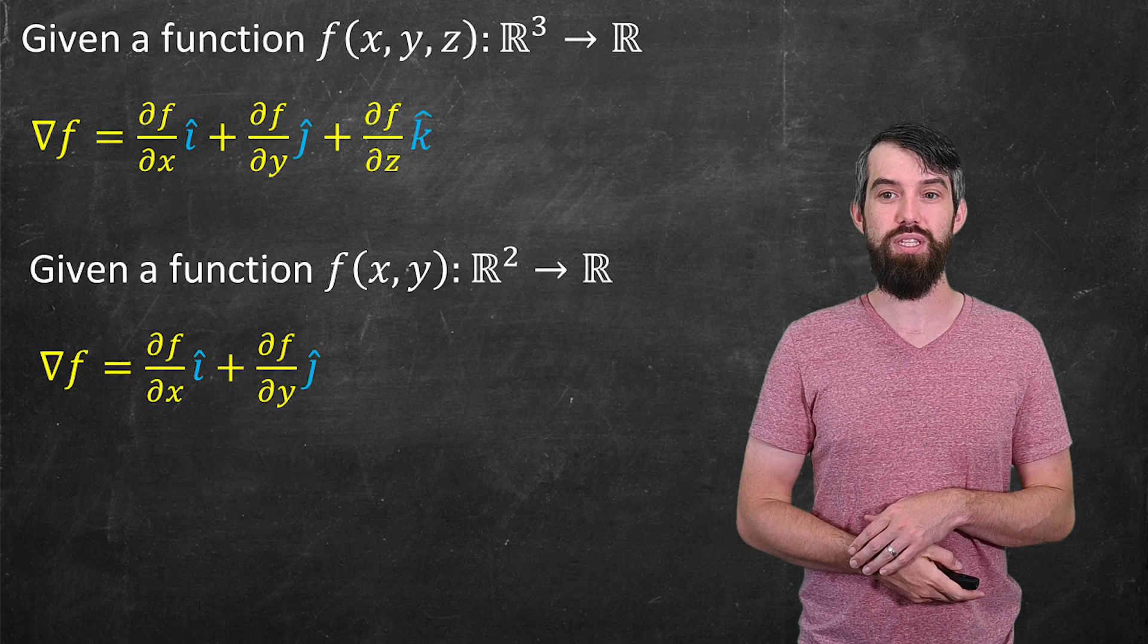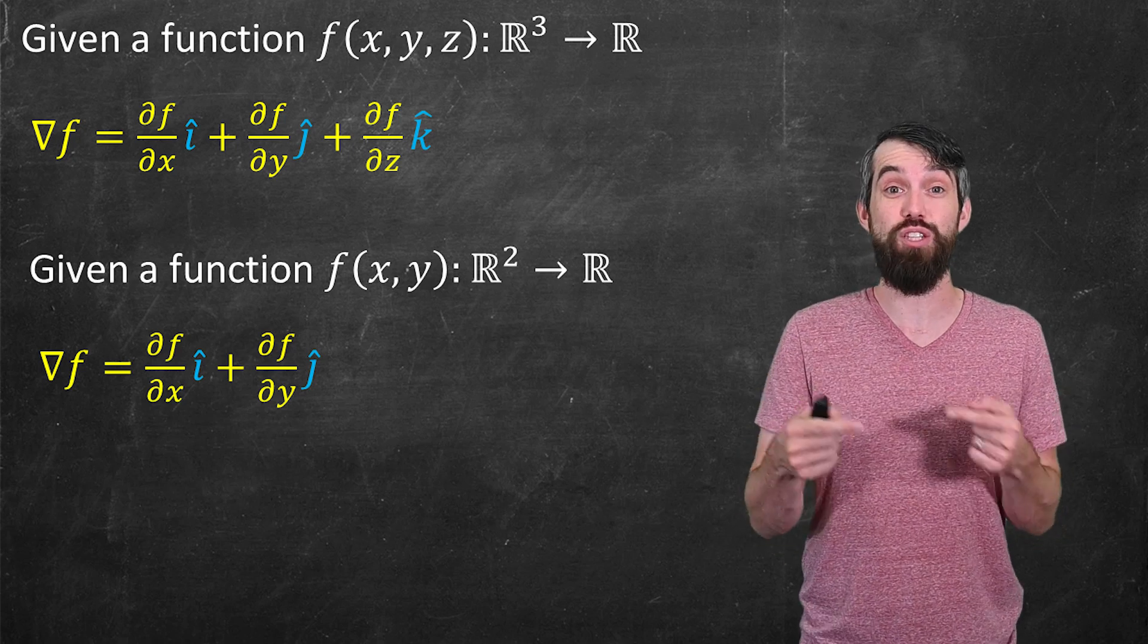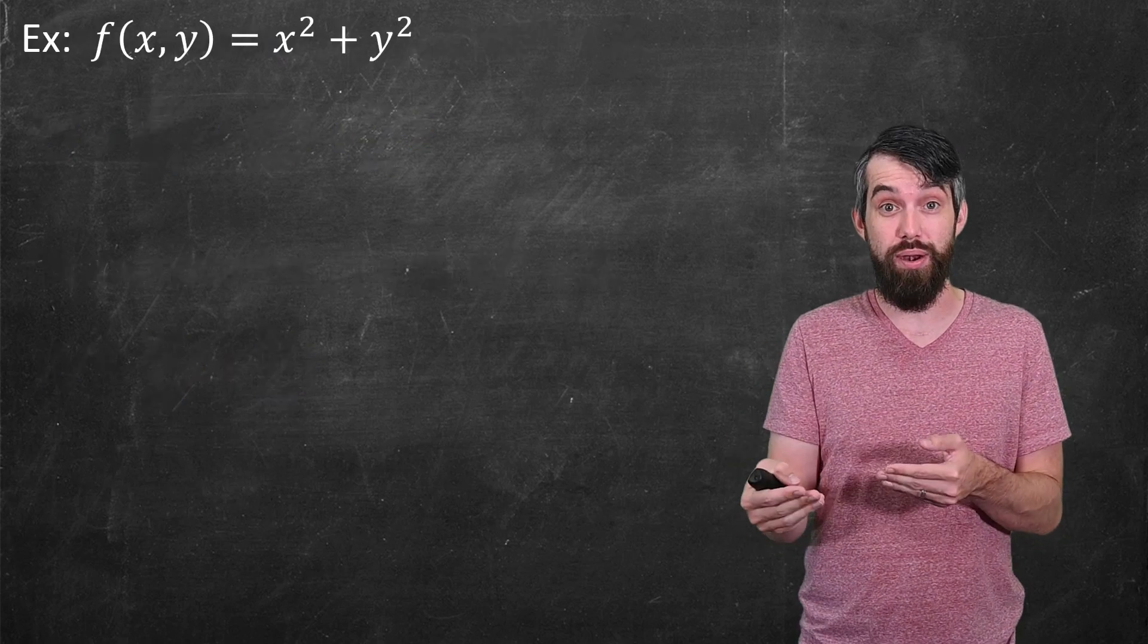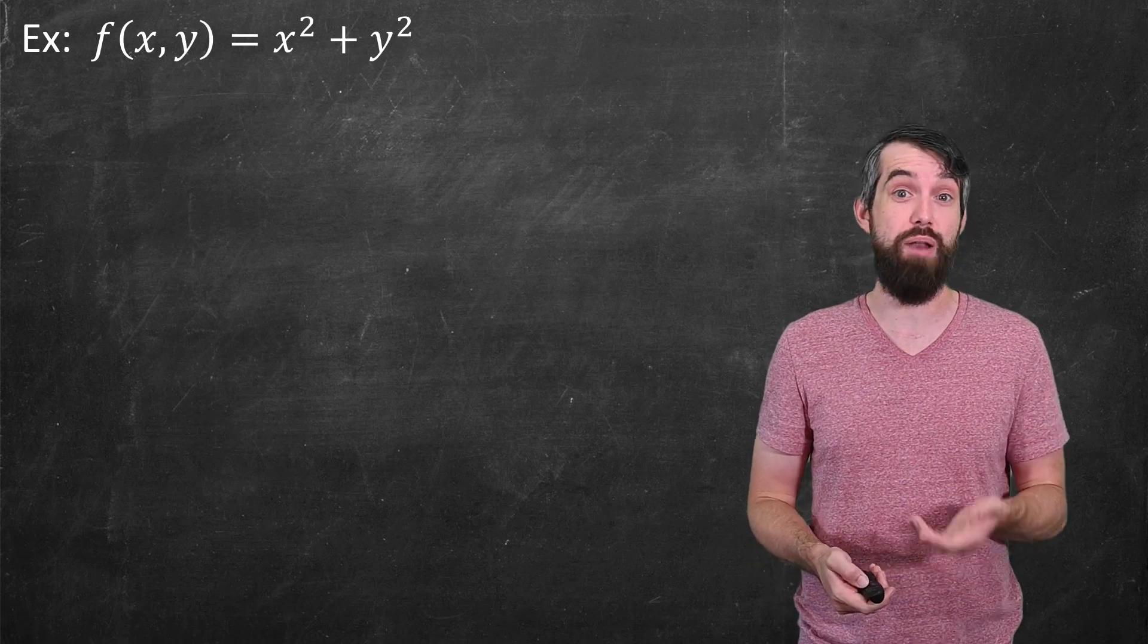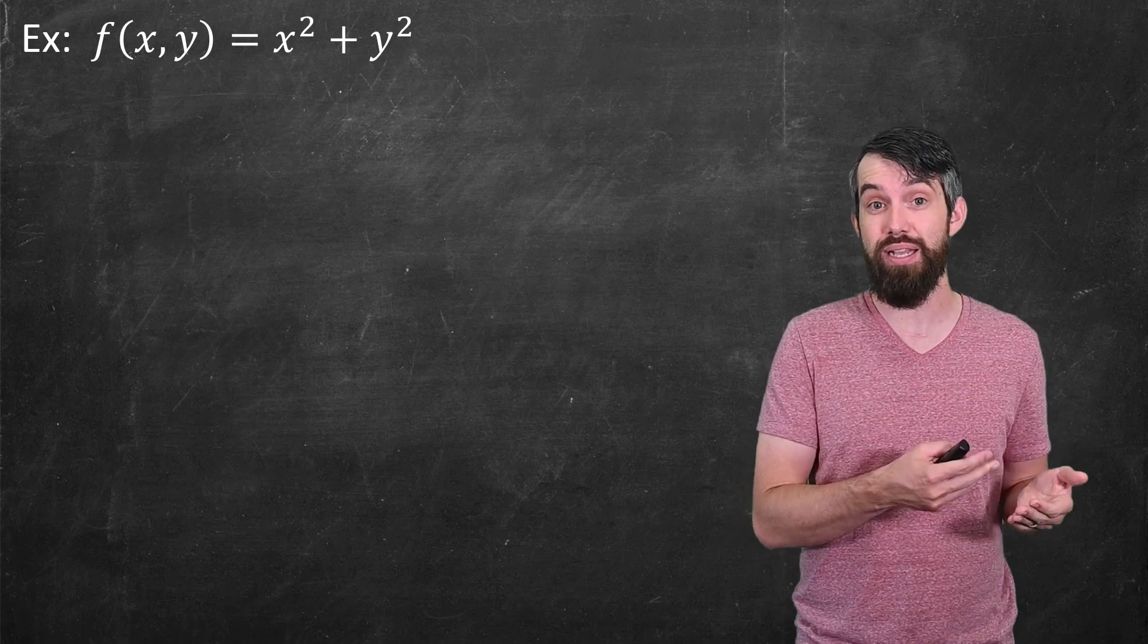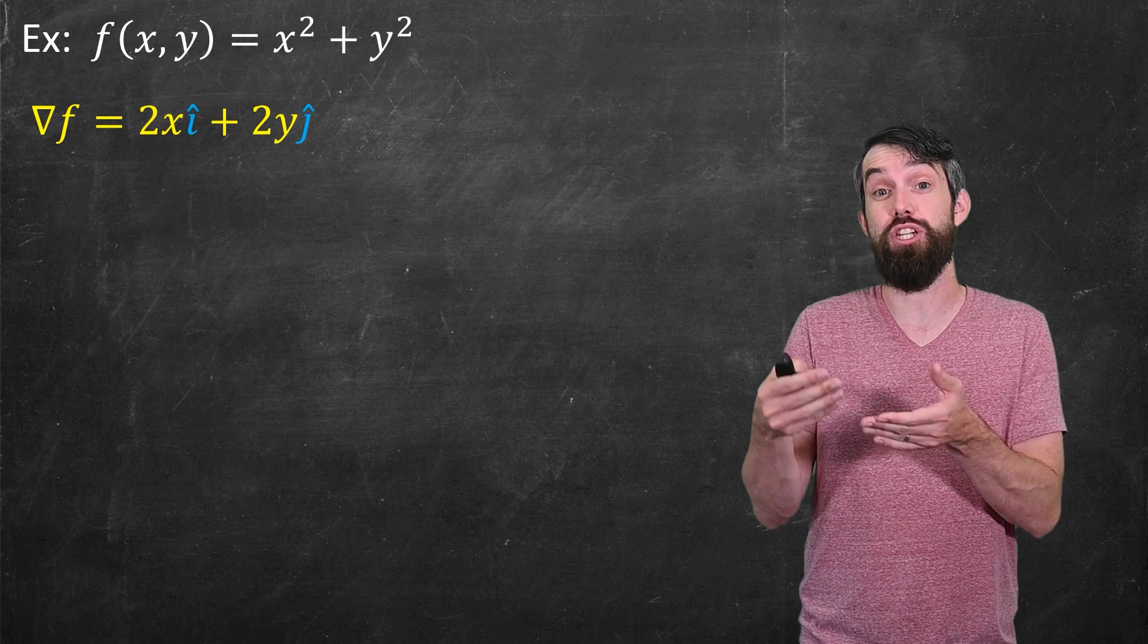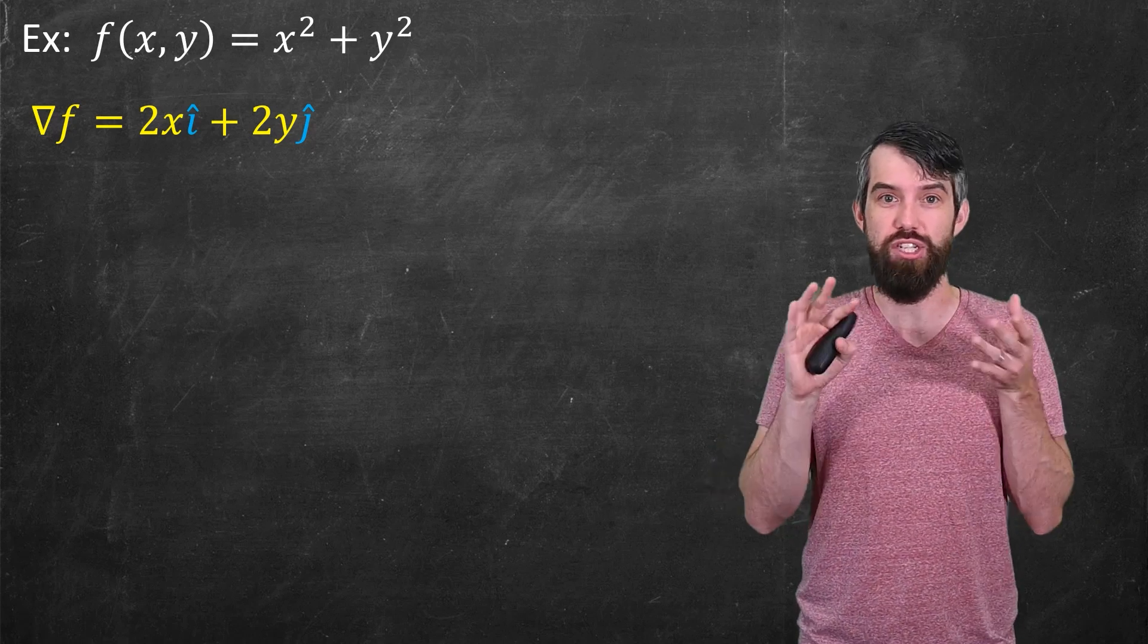So, for example, suppose that my function was the function f(x, y) = x² + y². Then we can compute out what its gradient is not too bad. The partial with respect to x is just 2x, and the partial with respect to y is just 2y. So, the gradient is just that.